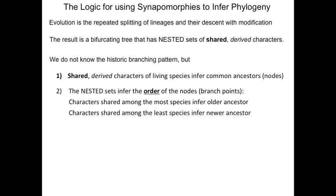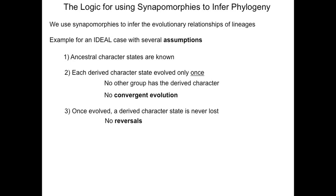Hopefully this hypothetical scenario has helped you understand the logic of using synapomorphies to infer phylogeny. Synapomorphies are the output of evolution — populations splitting and evolving new character states, that is, descent with modification. Therefore, synapomorphies are used to infer common ancestors, and nesting tells us the order of ancestors from more recent to more ancient. The logic for using synapomorphies is straightforward given the three assumptions for an ideal case.